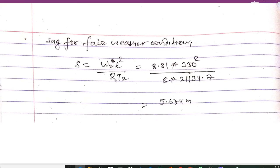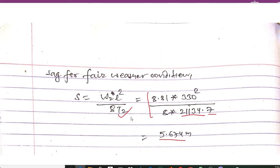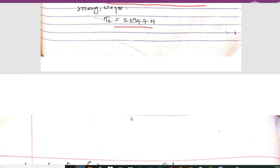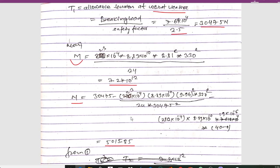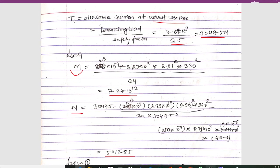The sag for fair weather conditions is given by: sag = w2·L² / (8·t2). Here w2 = 8.81 Newton per meter, the span length L = 350 meters, and t2 = 21,134.7 Newton. Calculating this gives a sag of 5.674 meters. This completes the calculation of sag and tension under fair weather conditions. Hope you understand — thanks for watching and please subscribe to my channel.